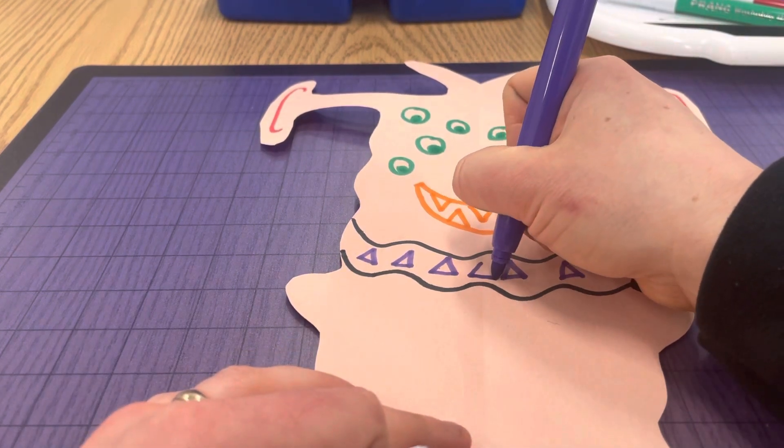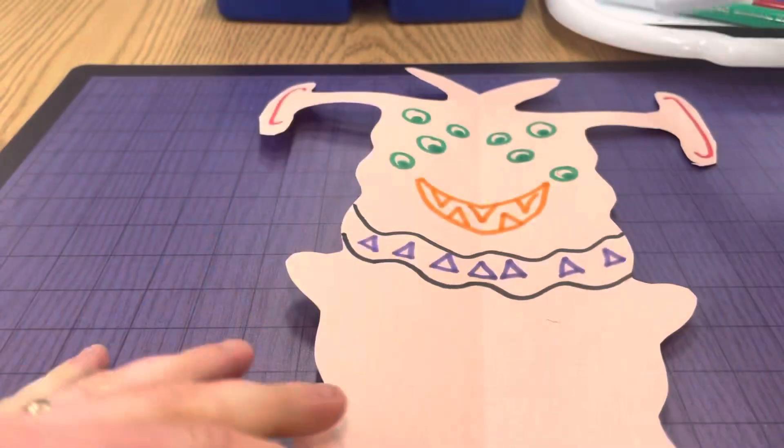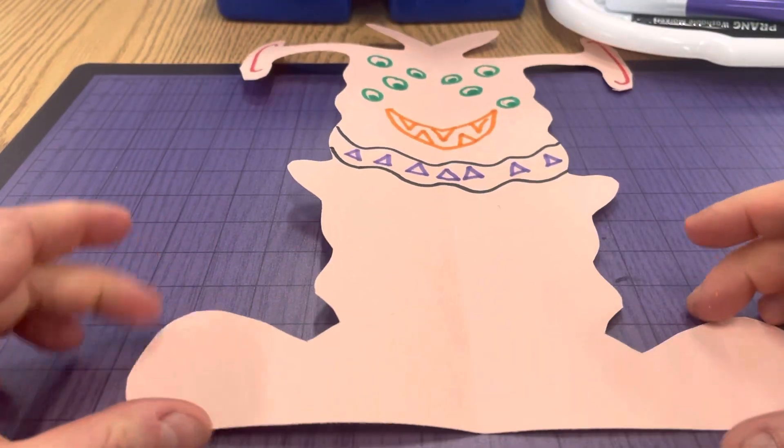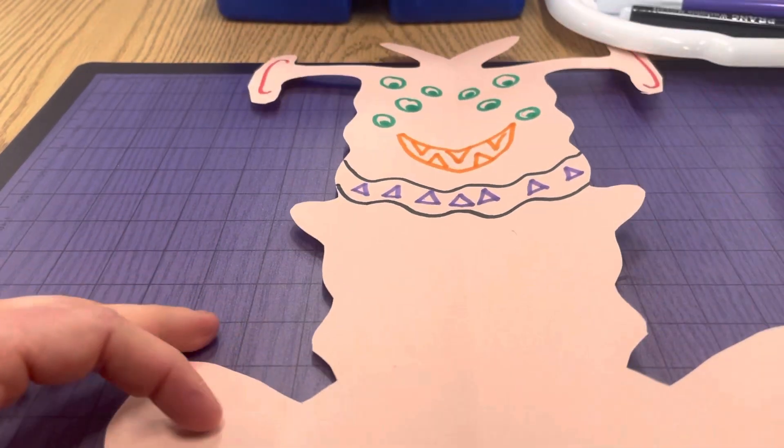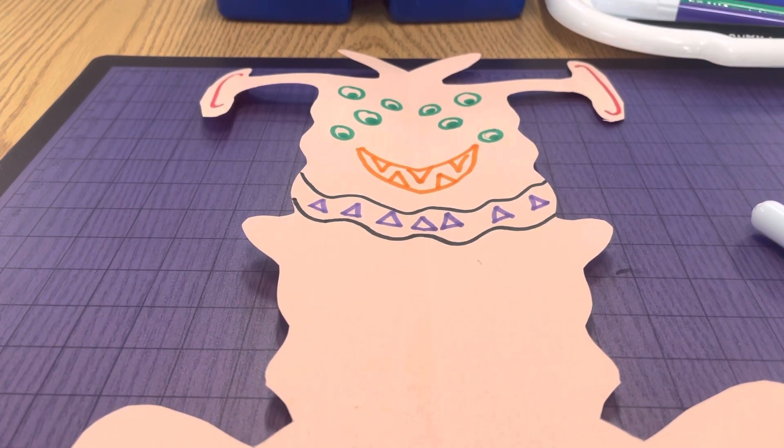And like I said, you can always do one straight down. That's fine. So let's practice our symmetry and make some symmetrical aliens. Make them fun, make them colorful and do your best.